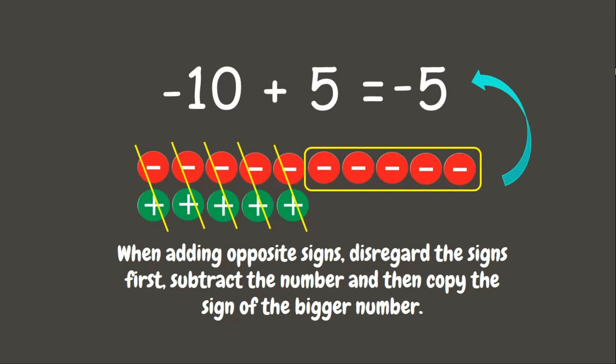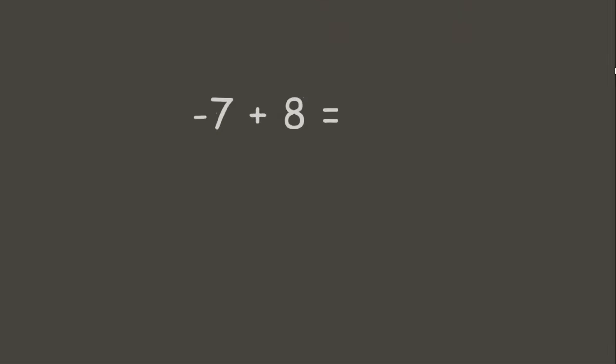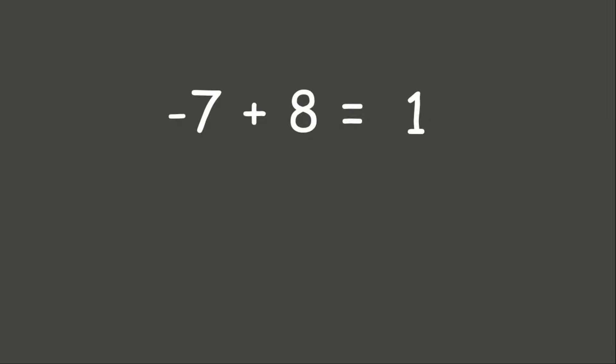Let's try another example: negative 7 plus positive 8. We disregard the signs and subtract: 8 minus 7 is 1. Now let's look at the sign of the bigger number — the bigger number is 8, which is a positive integer — so our answer should also be positive. Therefore, negative 7 plus positive 8 equals positive 1.